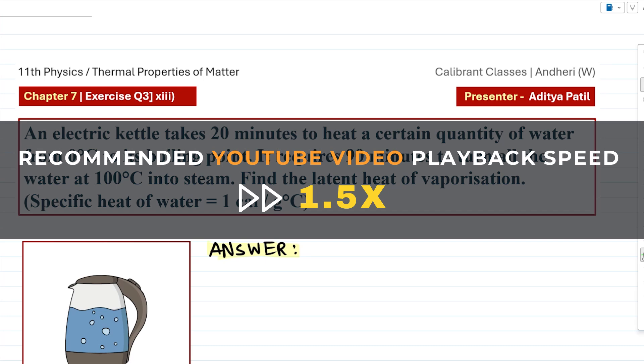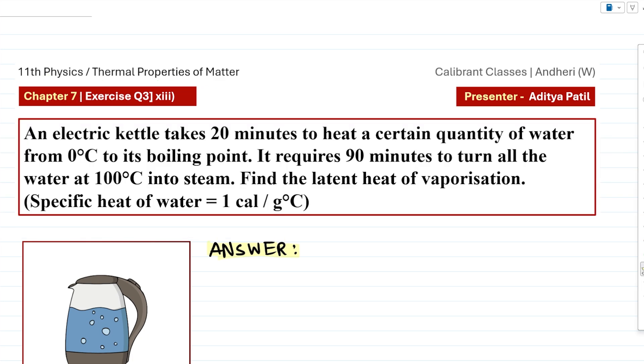Welcome students, we are discussing the 13th numerical from the exercise for chapter 7, Thermal Properties of Matter, of your 11th standard physics. Let's start. Question is that an electric kettle takes 20 minutes to heat a certain quantity of water from 0 degree Celsius to its boiling point, that is 100 degree Celsius.